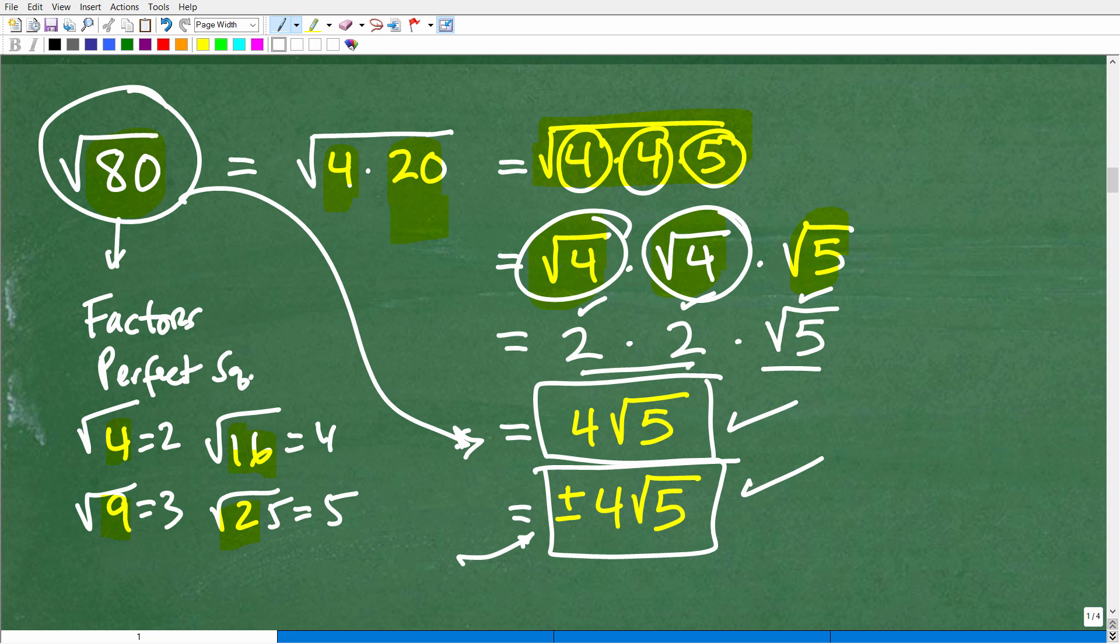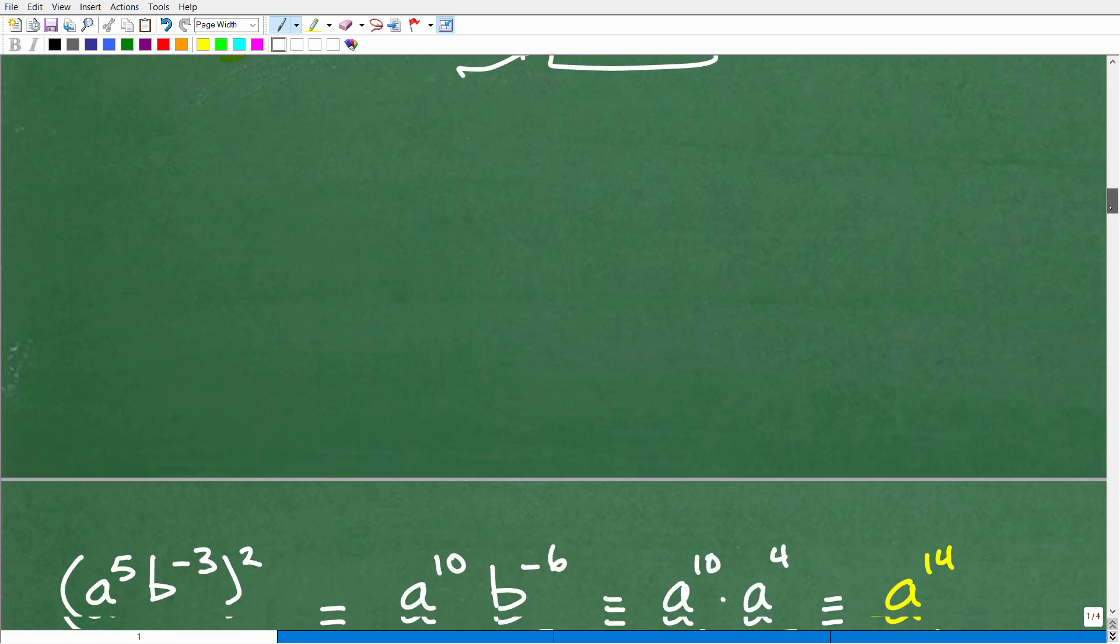So this is the square root of 80 would be these answers right here. So we got that right. If you got these first two right, very good. You're doing good.